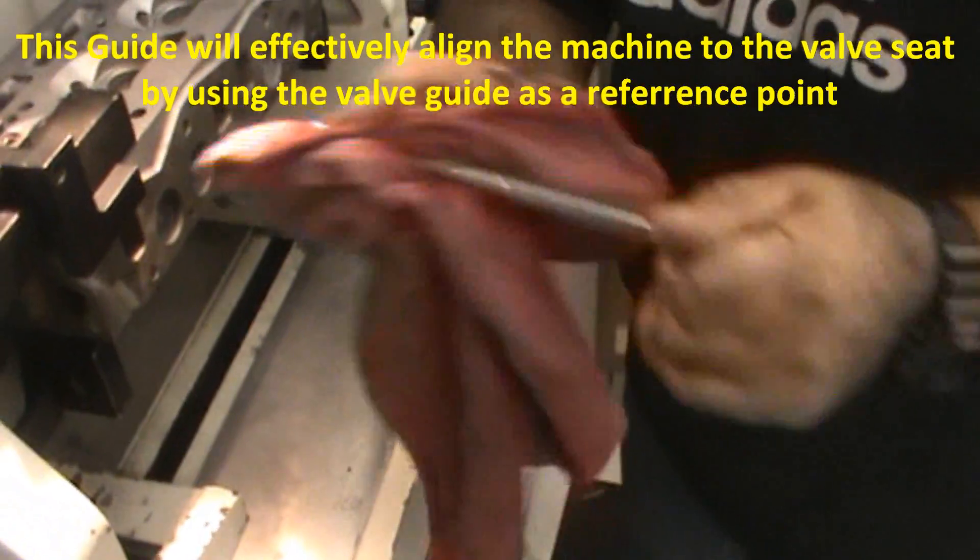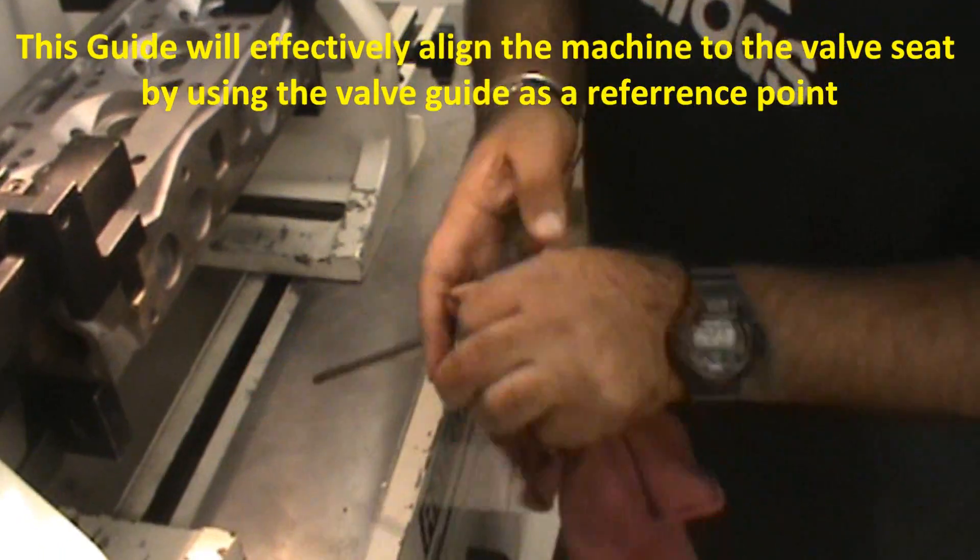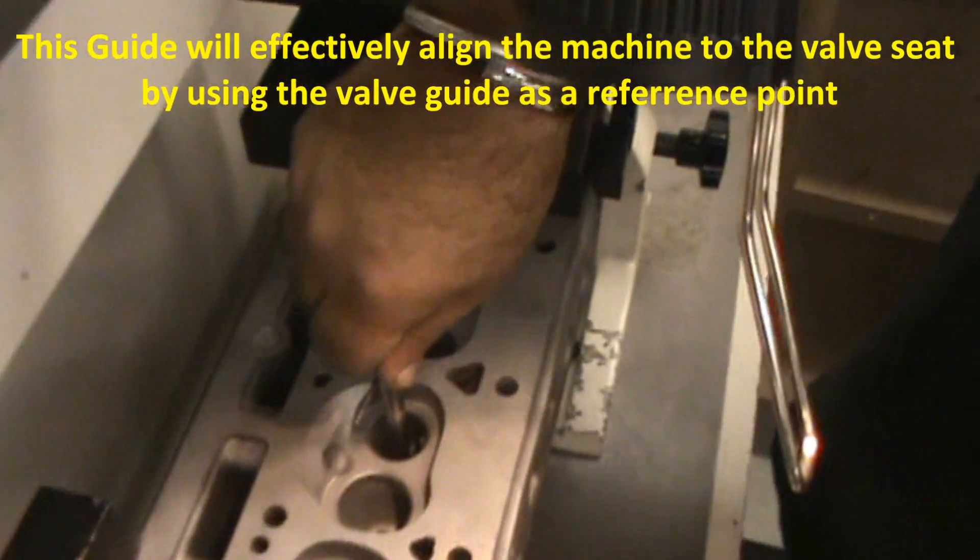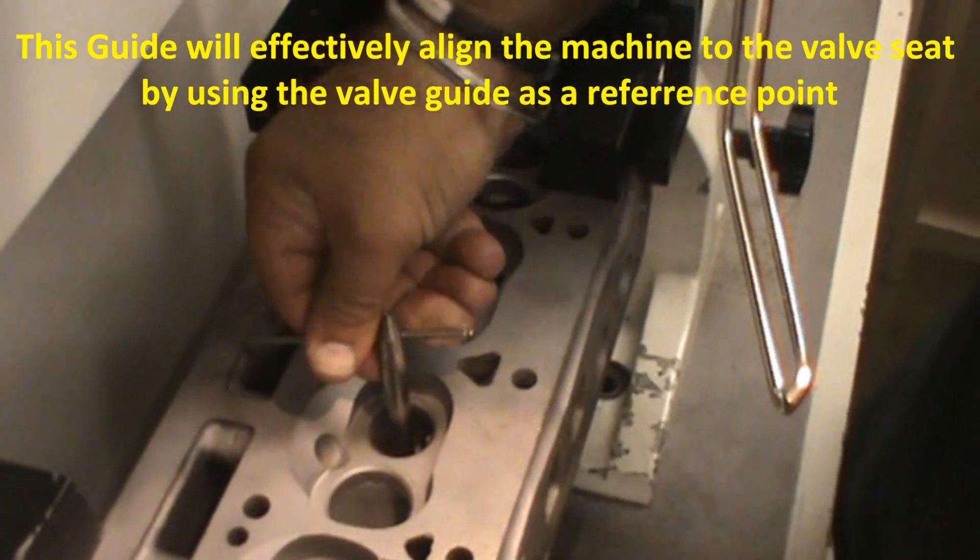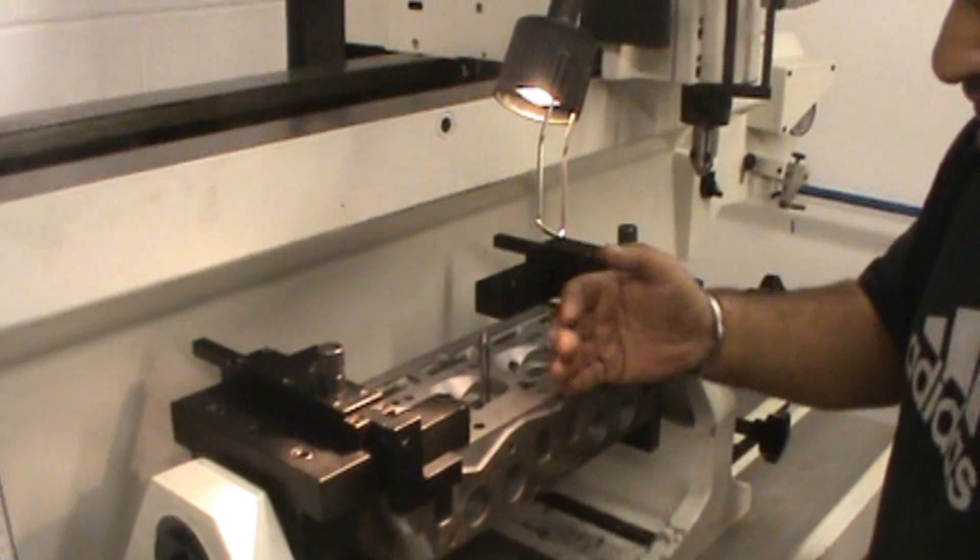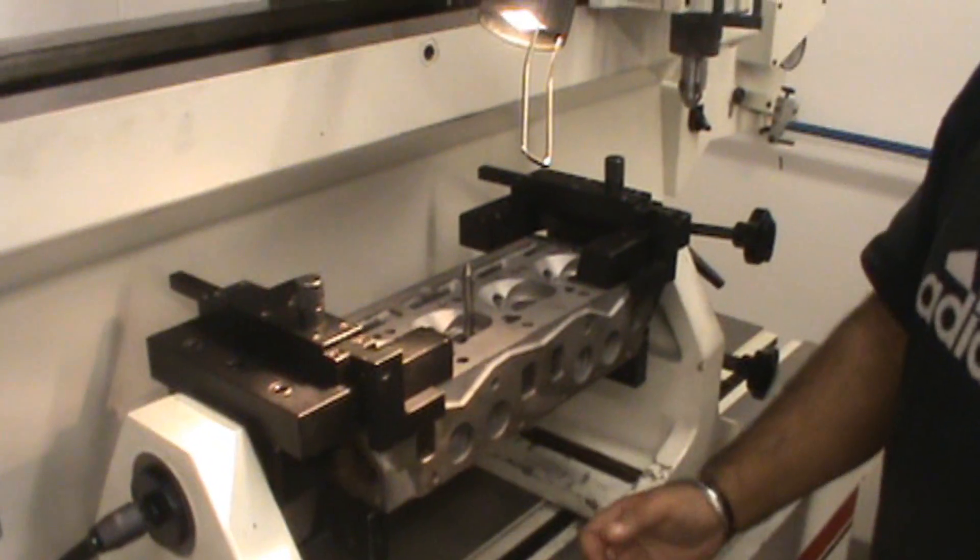This is the spigot or guide. And what we're going to do is insert it into the valve guide and turn it. What we're going to do is level the head with the machine to the datum zero.